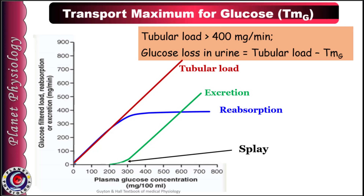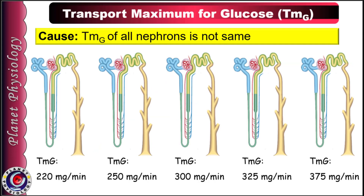Splay occurs because the TMG of all nephrons is not the same. As shown, some nephrons have a TMG of 220 mg per minute, some 250 mg, others 300 mg, and some 375 mg per minute. Nephrons with lower TMG begin to excrete glucose before others reach their transport maximum. The overall value of 375 mg per minute is reached when all nephrons reach their transport maximum for glucose. During splay, glucose appears in urine from nephrons with lower TMG values.